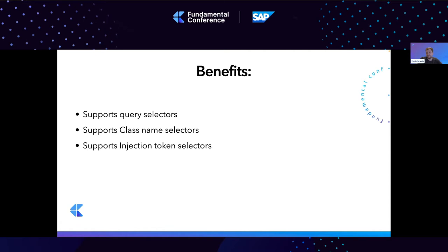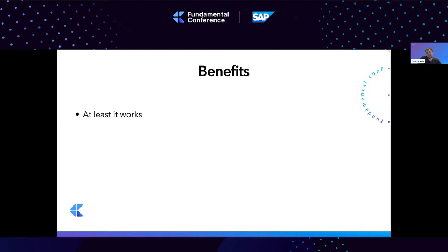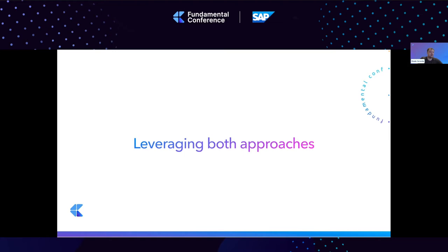This lets us embrace the full power of dependency injection — for example, when two components inherit the same interface and provide the same token, you can use multiple components that implement slightly different logic. The web component way mostly relies on querySelector to get elements; you can use some attributes, not just tag selectors, but it's not as powerful as the Angular way. Unfortunately, the benefit of that approach is just that it works.